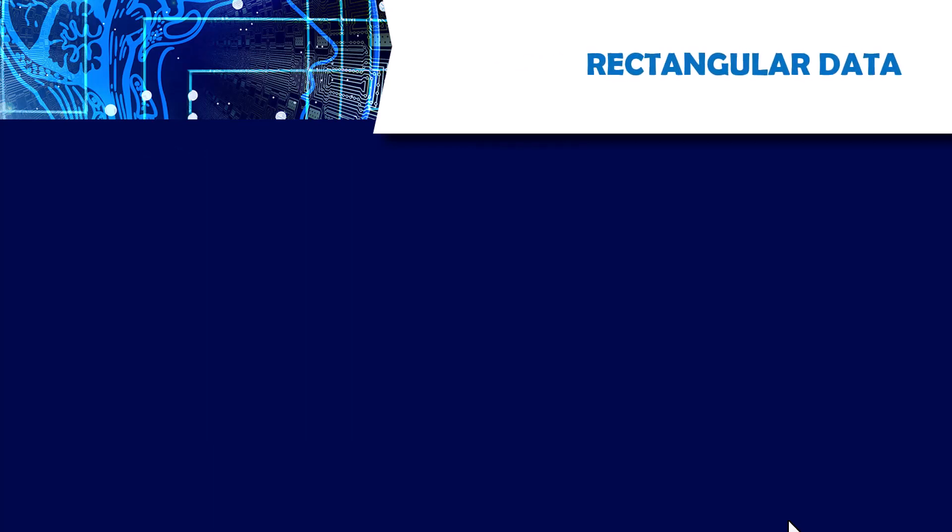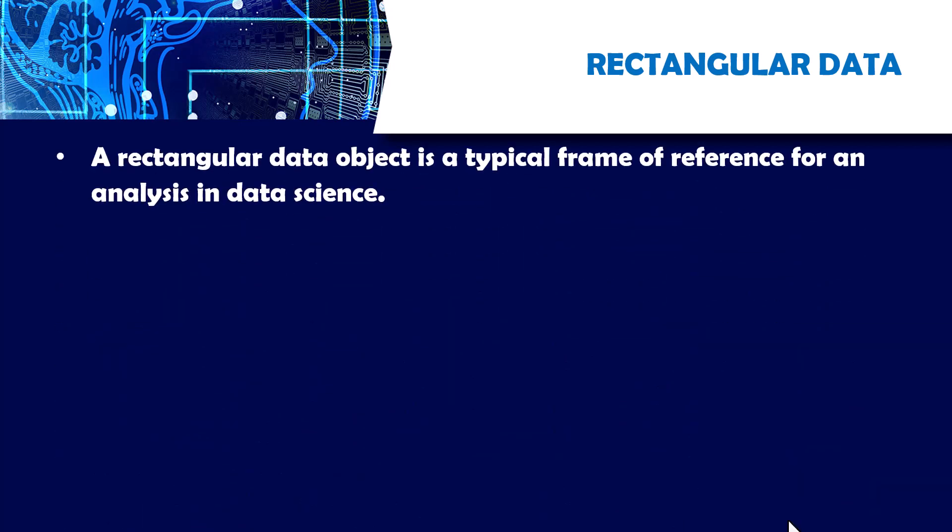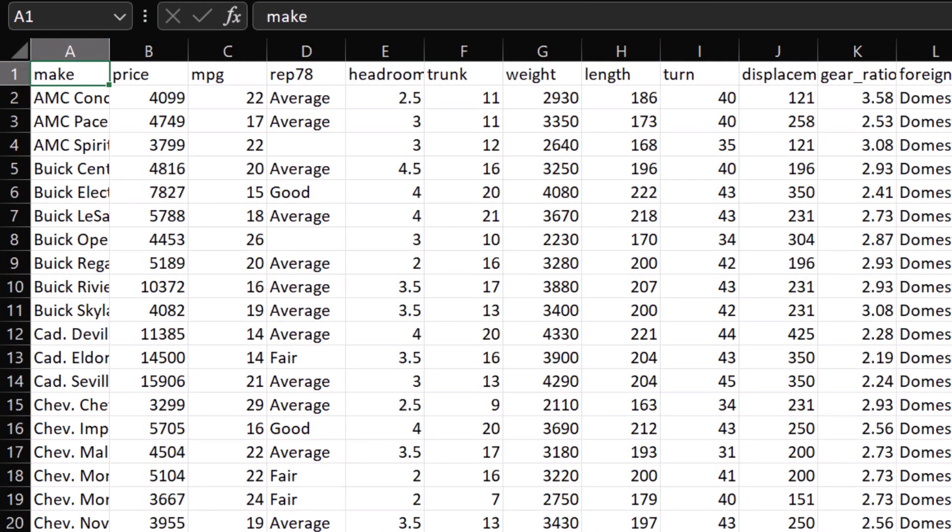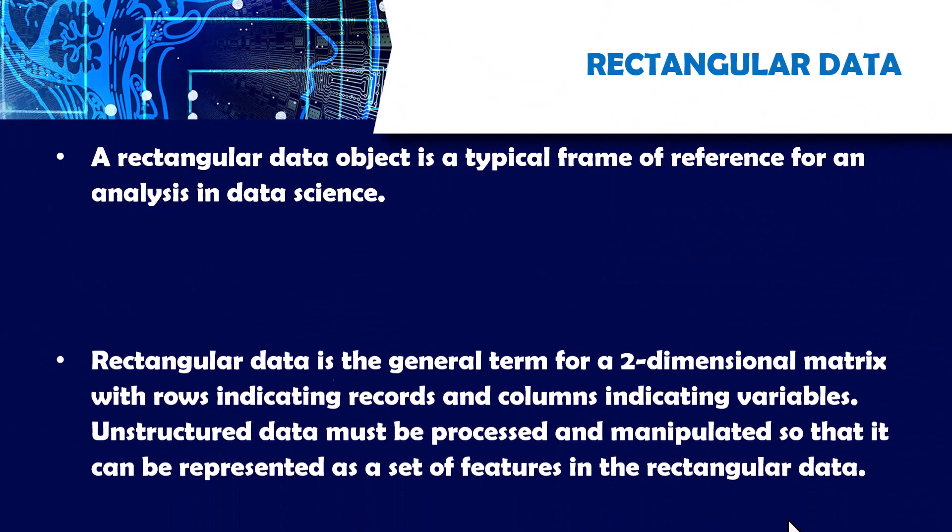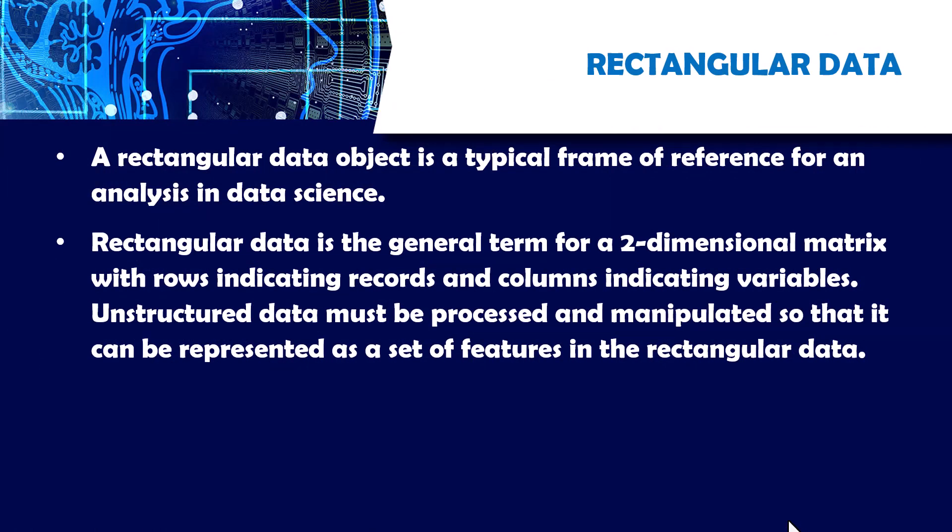Then we have terminology for rectangular data, which I talked about earlier. A rectangular data object is a typical frame of reference for an analysis in data science. I would look at rectangular data in form of an Excel format or a data frame in Python or R. So rectangular data is the general term for a two-dimensional matrix with rows indicating records and columns indicating variables. Unstructured data must be processed and manipulated so that it can be represented as a set of features in the rectangular data.